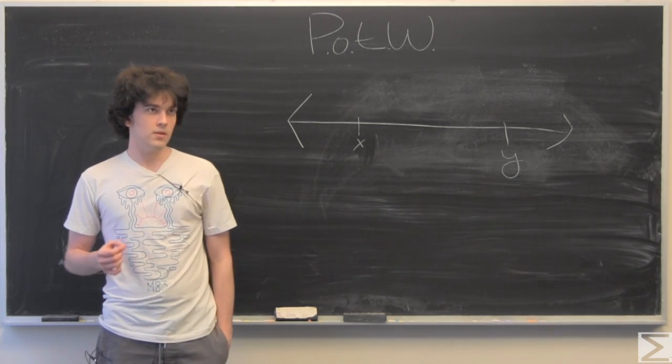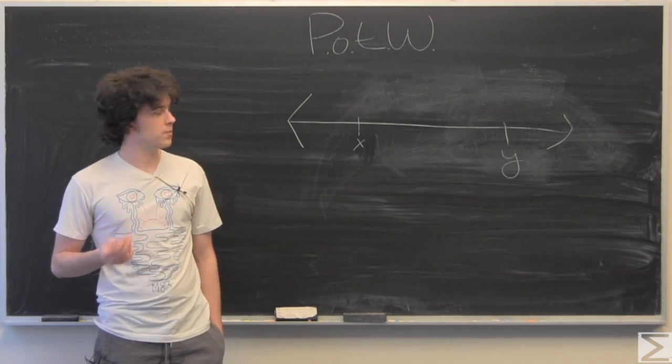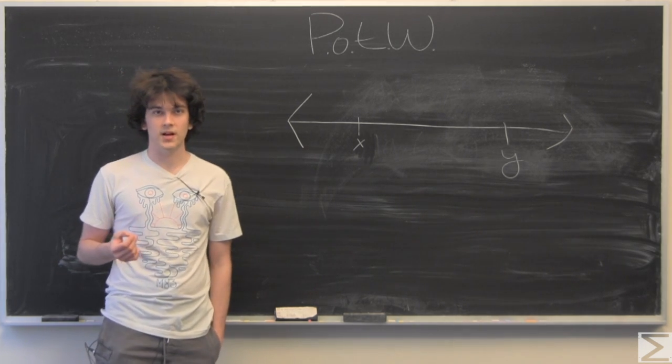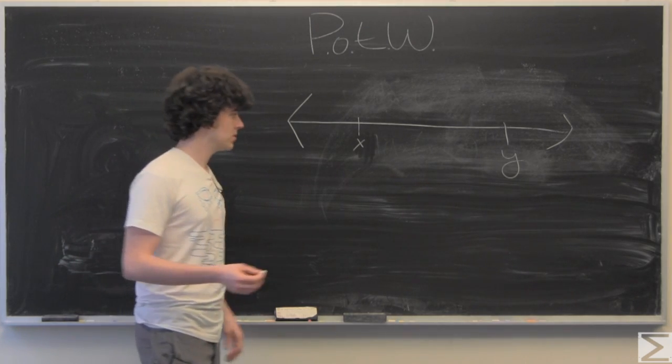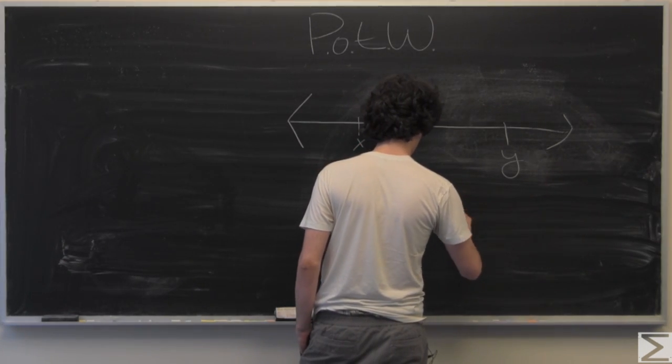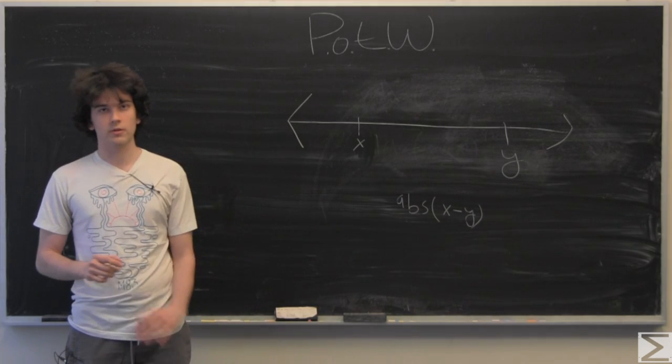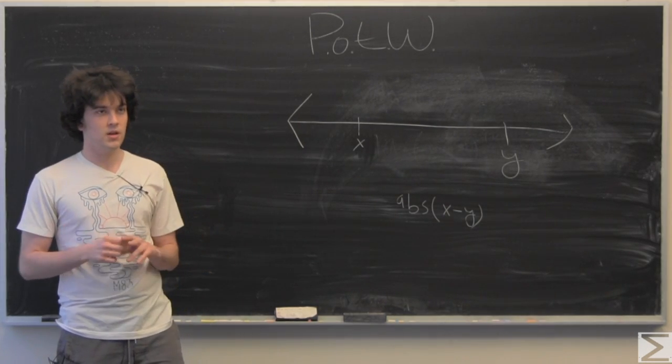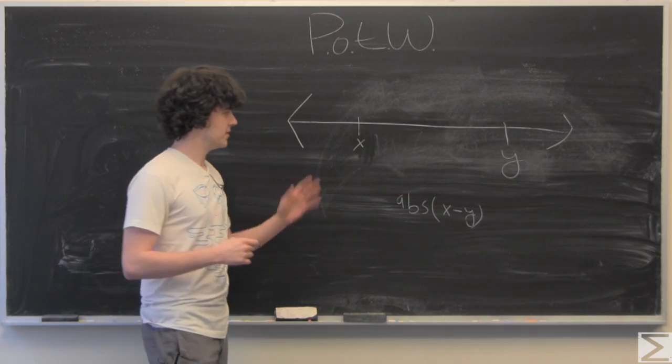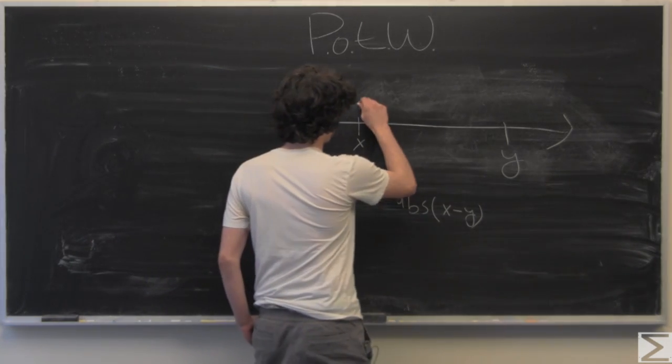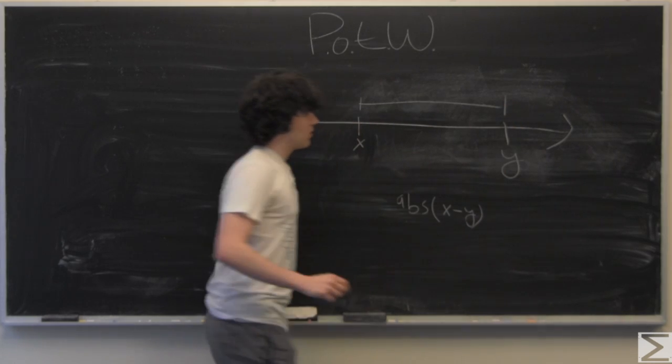One thing that we know, or you probably have seen before in a math class, is the distance function, which is the absolute value of the difference between two points. And of course the ordering doesn't matter because it's just the scalar value of the distance. So I drew that out there.